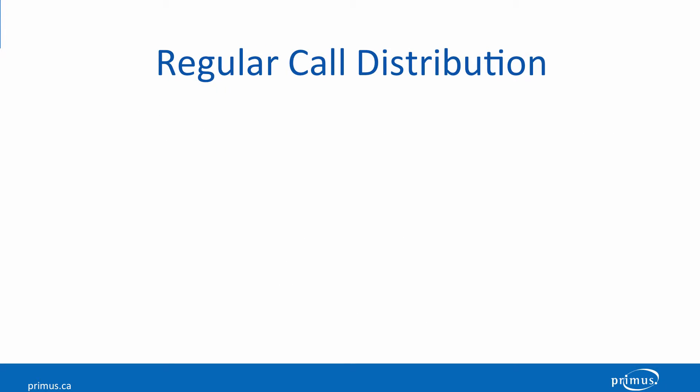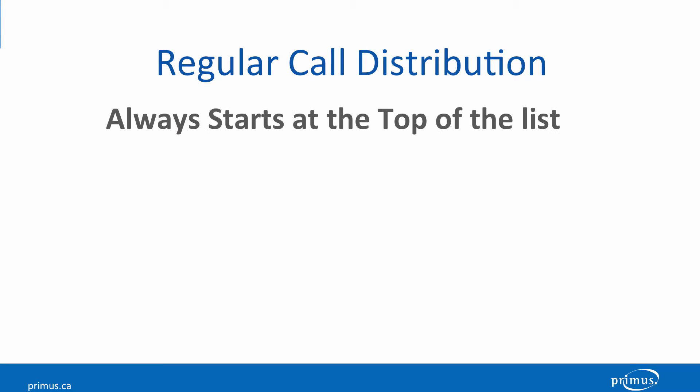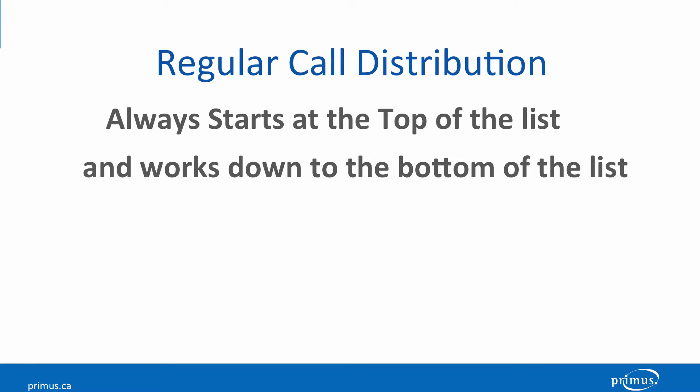Regular sends calls to the user's telephone in the order they are listed in the programming of the Hunt Group. Incoming calls go to the first available agent on the list, always starting with the first person programmed at the top of the list, and if a call is not answered, it continues down to the bottom of the Hunt Group list.